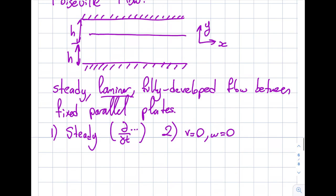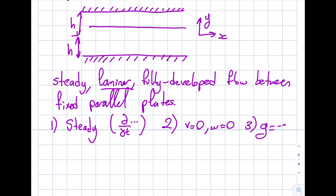The third thing I want to highlight is that gravity is in the negative Y direction — Y is pointing up, that's why I put a negative sign. And I'm going to treat this as 2D: there's no change towards or away from the screen. So if you have a cross-section at any plane in the Z direction, what's happening there is exactly the same — there's no variation there.